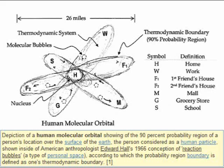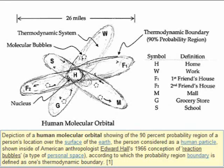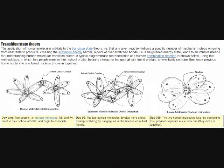A follow-up homework assignment for more advanced human chemistry students is to study or investigate how the CPK model of the human extrapolates into human molecular orbital theory, which is the study of human movement in terms of molecular orbitals or 90% probability regions of a person's location over the surface of the earth in sped-up windows of time — wherein theories such as American anthropologist Edward Hall's 1966 conception of reaction bubbles are used, defined within thermodynamic system orbitals. In this perspective one needs to study how the 26 elements of a person or human molecule interact with the 92 naturally occurring elements of the surface of the earth, which in this point of view is defined as catalyst or substrate.